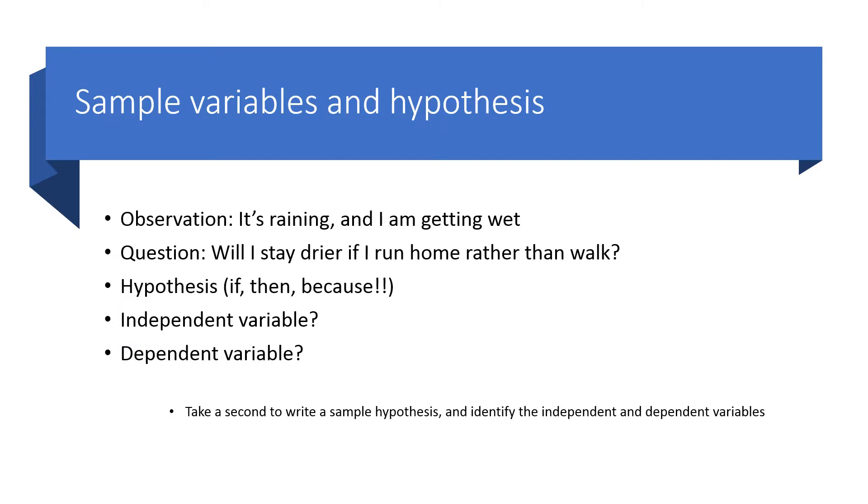Here's a sample observation to use, and we'll actually write a hypothesis from this. You observe as you're walking home and it starts to rain that you're getting wet, and you start to question: will I be drier if I run home rather than walk home? With that in mind, go ahead and write a hypothesis using the correct if-then-because format, and also please identify the independent and dependent variable. You can pause this video and take a second to do that now.